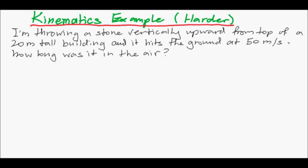I'm throwing a stone vertically upwards from the top of a 20 meter tall building and it hits the ground, eventually, at 50 meters per second. How long was it in the air? We're throwing a stone and it hits the ground at a particular speed and we want to know how long that stone spent in the air.